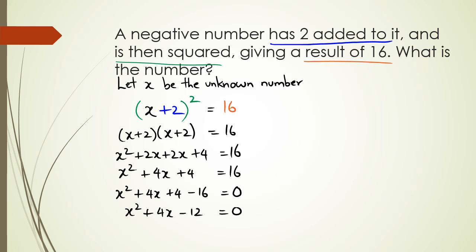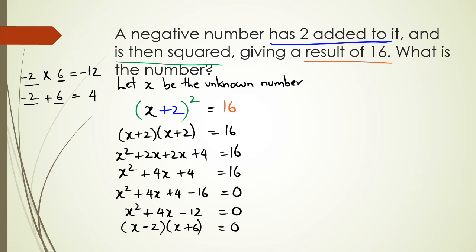At this point I'm looking for two numbers that multiply to negative 12 and add to positive 4. That's negative 2 and positive 6. So I factorize as (x - 2)(x + 6) = 0.